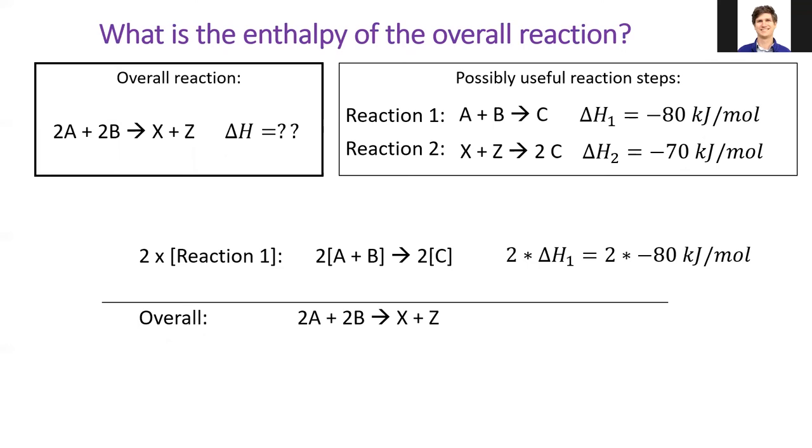Well, reaction 2 has an X and a Z, but they're on the wrong side of the reaction. That's no problem for Hess. First, we'll just reverse reaction 2, and it puts X and Z on the right side.